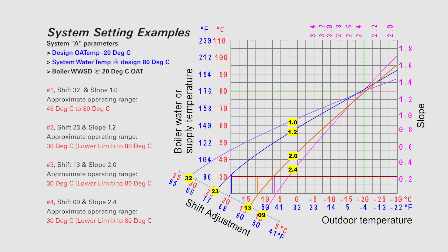In example 3, shift is set at 13 and slope is set at 2.0, giving an approximate operating range between 30 C and 80 C but with a steeper slope than example 2. In example 4, shift is set at 0.9 and slope is set at 2.4, giving a range of 30 C up to 80 C with an even steeper slope than examples 3 or 2. Note that in examples 3 and 4, the minimum boiler water temperature is maintained until a colder outdoor air temperature before the set point starts to rise to the design temperature.